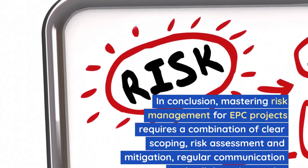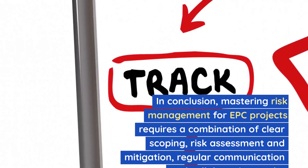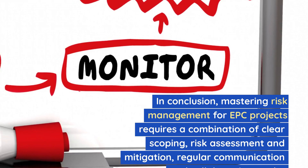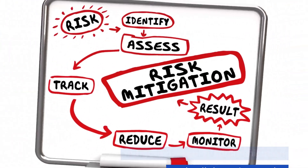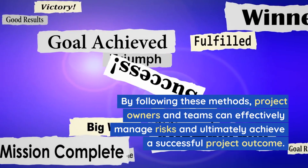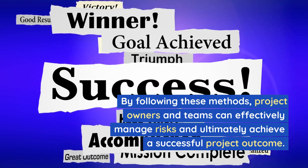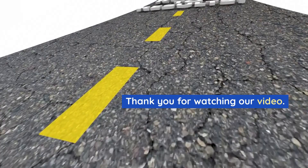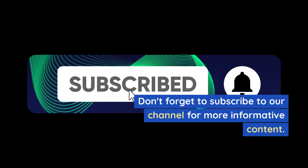In conclusion, mastering risk management for EPC projects requires a combination of clear scoping, risk assessment and mitigation, regular communication and collaboration, and a comprehensive risk management plan. By following these methods, project owners and teams can effectively manage risks and ultimately achieve a successful project outcome. Thank you for watching. Don't forget to subscribe to our channel for more informative content.